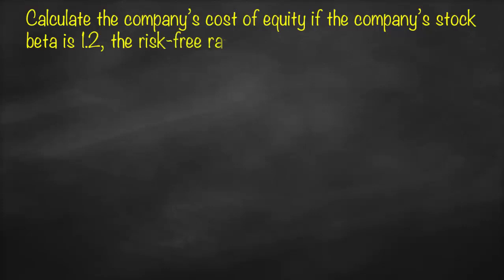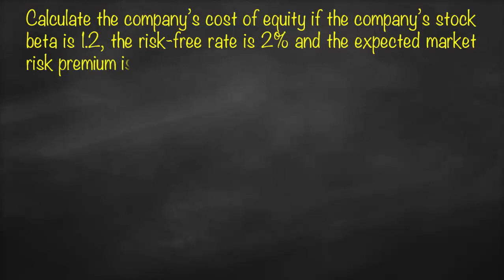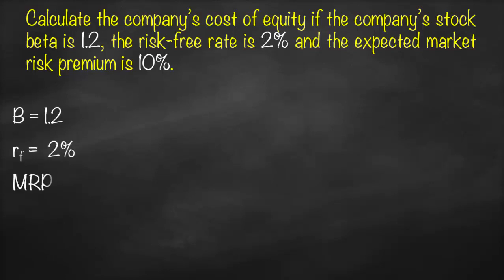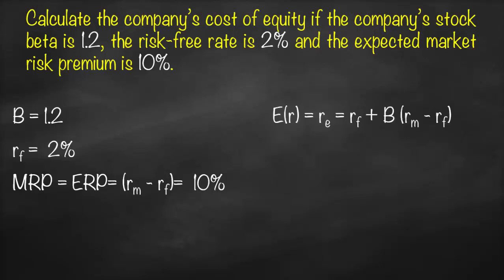Another question: calculate the company's cost of equity if the company's stock beta is 1.2, the risk free rate is 2%, and the expected market risk premium is 10%. The variables given are: beta of 1.2, risk free rate of 2%, and market risk premium — also called equity risk premium, which is market return minus risk free rate — given as 10%. Our CAPM formula is: expected return or cost of equity equals risk free rate plus beta multiplied by market return minus risk free rate.